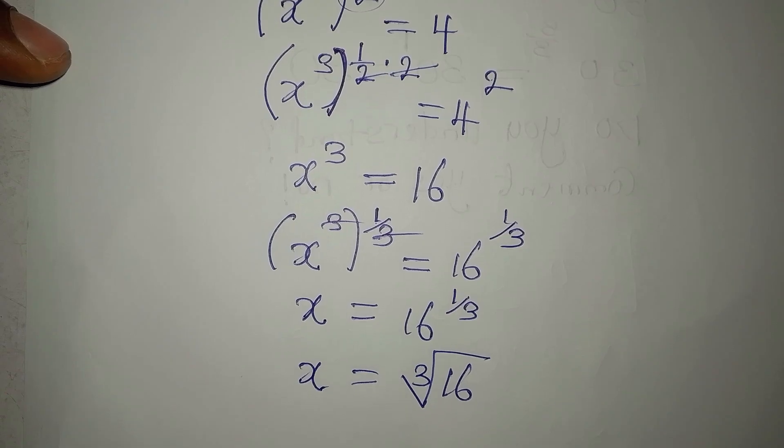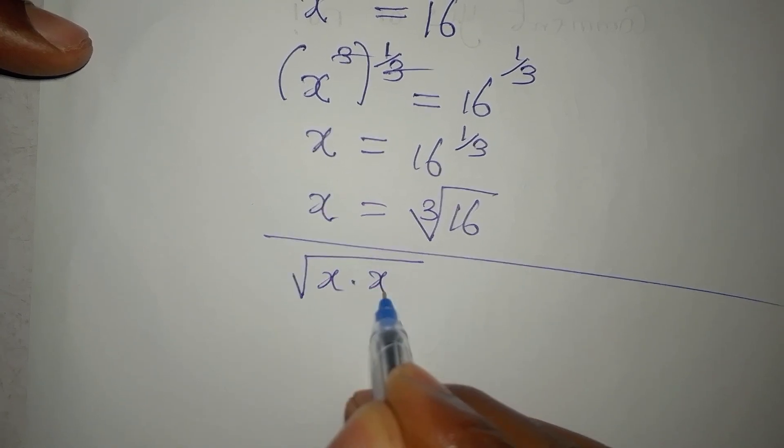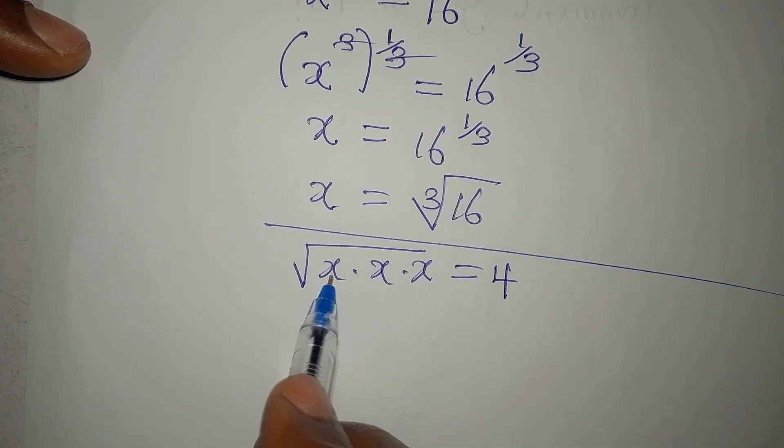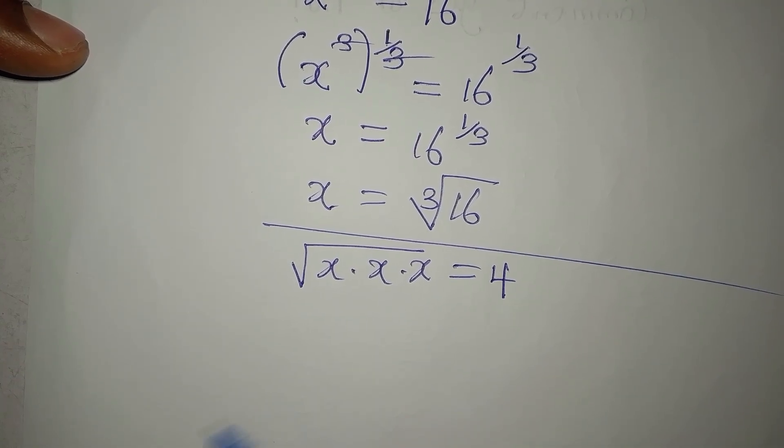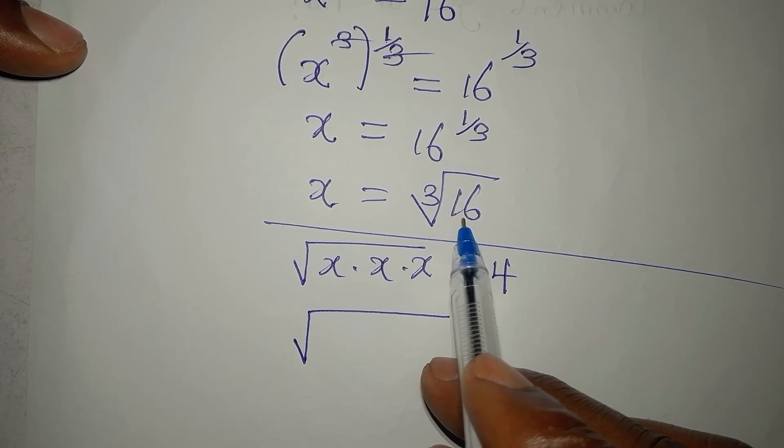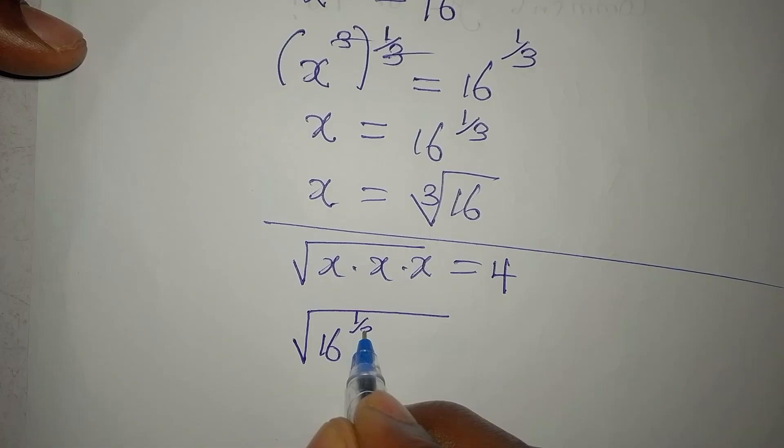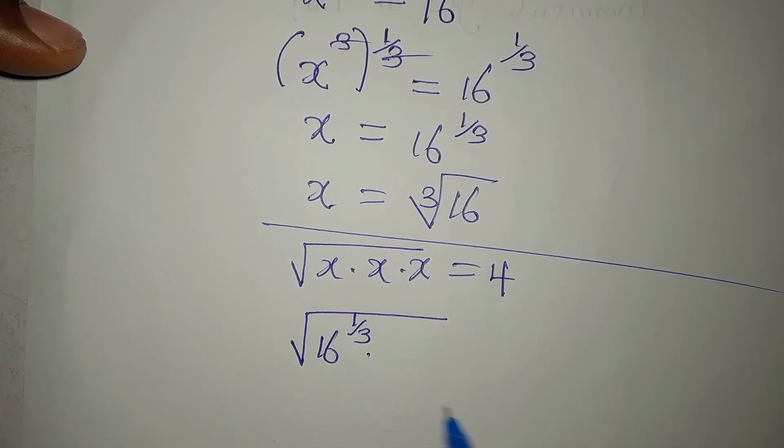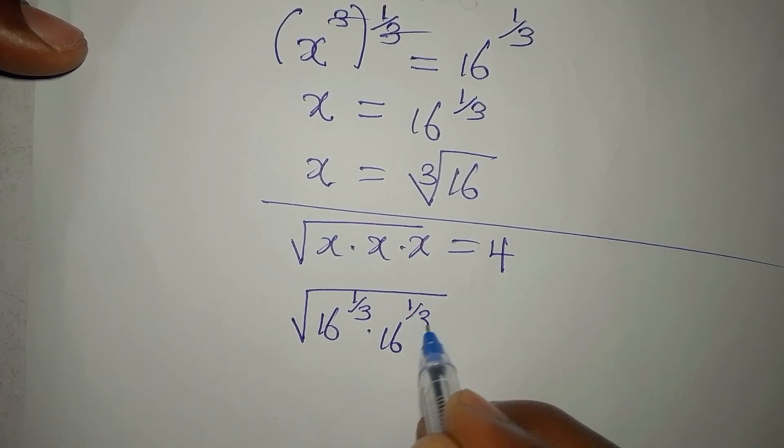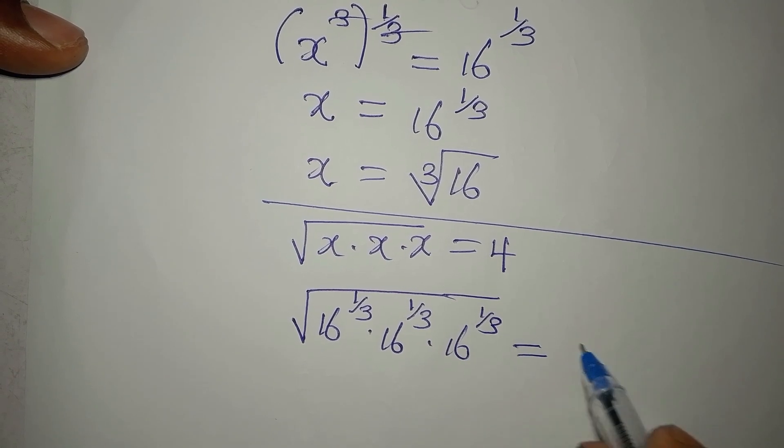And like we always do, we verify our result. The equation is square root of x times x times x equals 4. Now, in place of x, we have cube root of 16. The cube root of 16 is the same thing as 16 to the power of 1 over 3, multiply by the next x, which is 16 to the power of 1 over 3, then multiply by 16 again to the power of 1 over 3. And this is equal to 4.